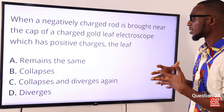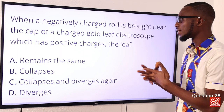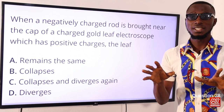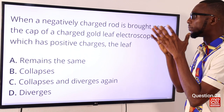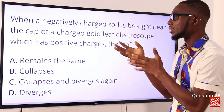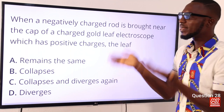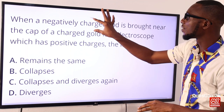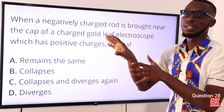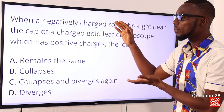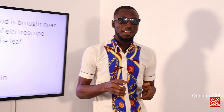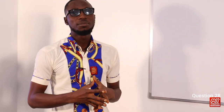Question 28: When a negatively charged rod is brought near the cap of a gold leaf electroscope that carries positive charges, the divergence of the leaf decreases. The same effect occurs in the reverse case — a positively charged rod brought near a negatively charged electroscope also causes divergence to decrease. The correct option is option D: divergence decreases.